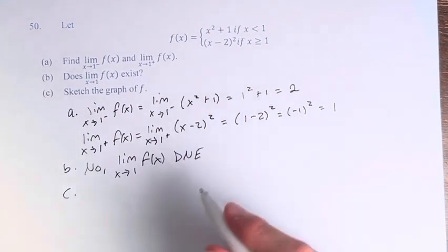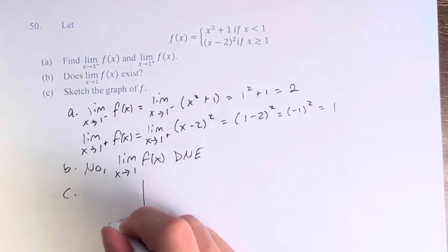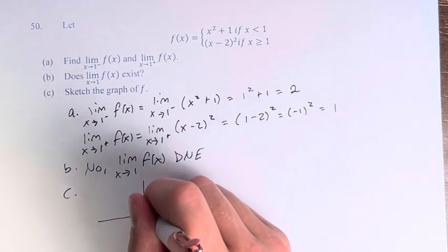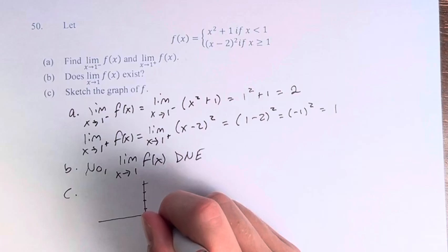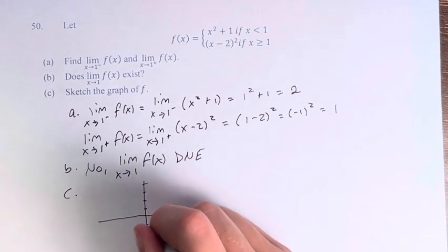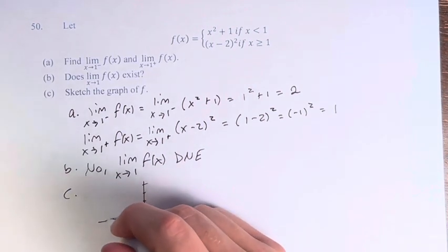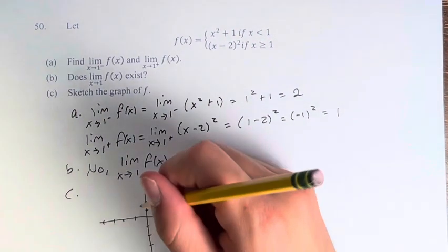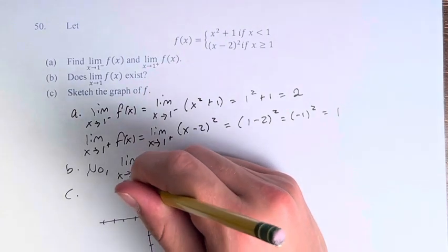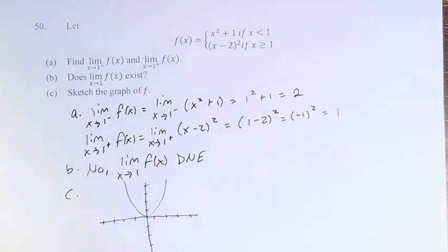We're also asked to sketch a graph of f, which we can do. 1, 2, 3, 4. 1, 2, 3, 4. So we have the basic function of the quadratic, y equals x squared, and we have two separate functions here.